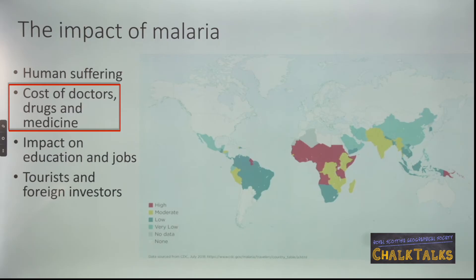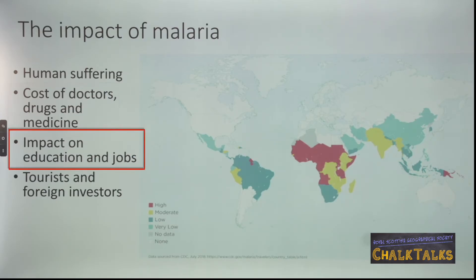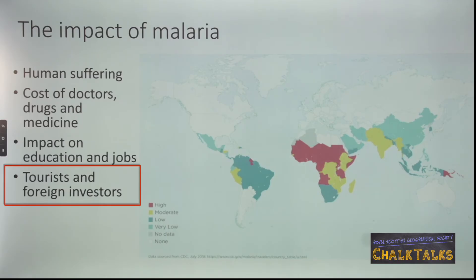Spending money on medicine, drugs and doctors to look after malaria sufferers means there is less money available to tackle other diseases or to invest in clean drinking water or sanitation, meaning more people — especially children — die from other preventable diseases such as cholera or diarrhoea. Education also suffers as there is less money to invest in schools and children miss school due to episodes of malaria, impacting earning power later on. Adults are also unable to work during episodes of malaria, leading to lower incomes and lower productivity. Tourists and foreign investors avoid malarial areas, resulting in lower foreign currency earnings, lost job opportunities and more poverty.